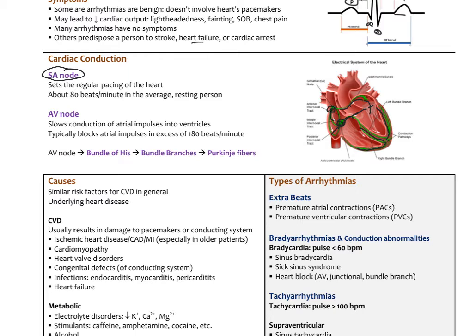The AV node filters and slows down impulses. It can have its own intrinsic rhythm of 40 to 60 beats per minute if the SA node goes offline — which is one reason we see bradycardia. Typically the AV node will block any impulses greater than 180 beats per minute, acting as a filter to prevent the ventricles from overpacing and beating too quickly.